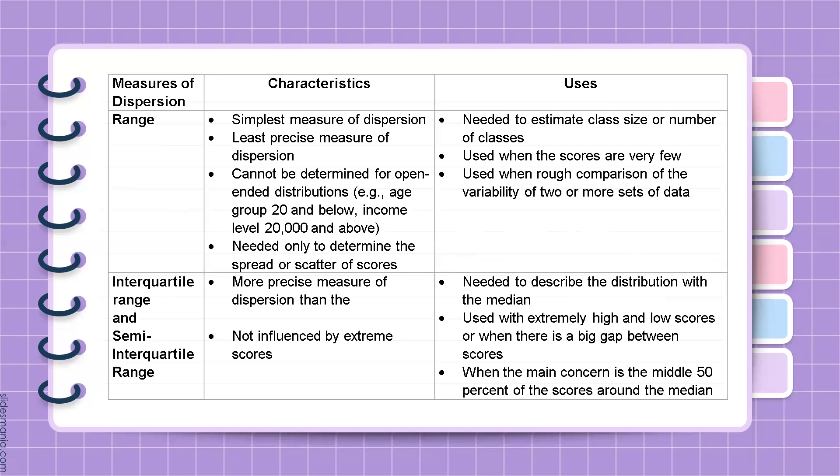Let's consider the characteristics and uses of range, interquartile range, and semi-interquartile range. The range is the simplest but least precise measure of dispersion since it depends only on the highest and lowest scores. It cannot be determined for open-ended distributions, such as age group 20 and below or income level 20,000 and above. It is used to determine the spread of scores, estimate class size, when scores are few, or for rough comparison of variability between two or more data sets.